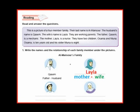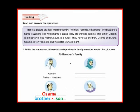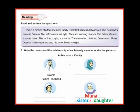Osama and Muna. Osama is ten years old, and his sister, Muna, is eight.